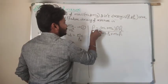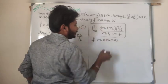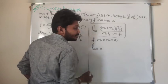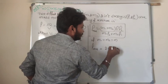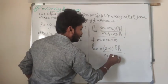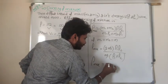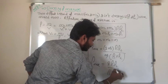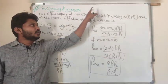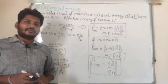If masses of the two liquids are equal, m1 = m2 = m, then density of mixture simplifies to: rho = 2·rho1·rho2 / (rho1 + rho2). This is the direct formula for density of the mixture when two liquids have equal masses.